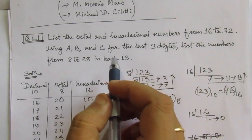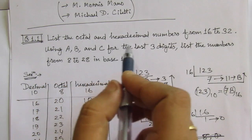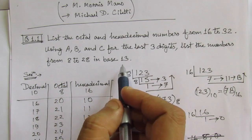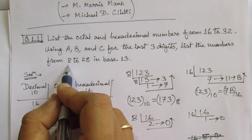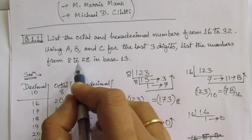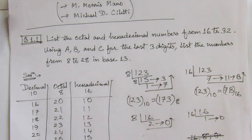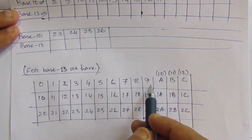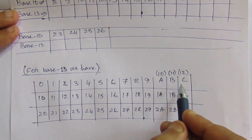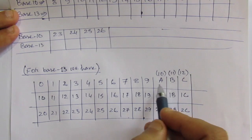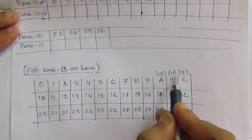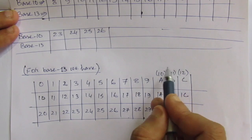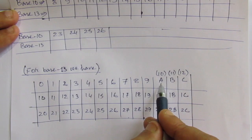Now let us see the next part of the problem: using A, B, and C for the last three digits, list the numbers from 8 to 28 in base 13. We have to make a list of decimal numbers 8 to 28 and write their respective base 13 numbers. In base 13, we use digits 0 through 9, then A, B, and C — where A represents 10, B represents 11, and C represents 12 in decimal.